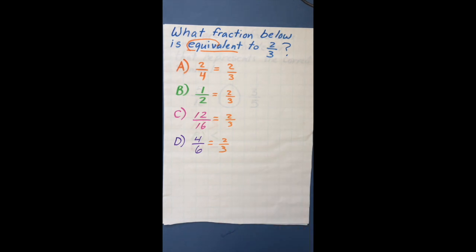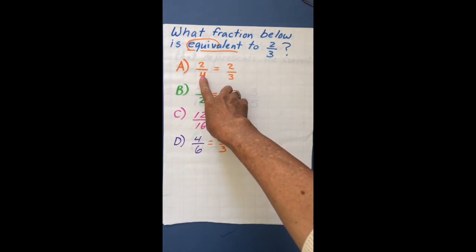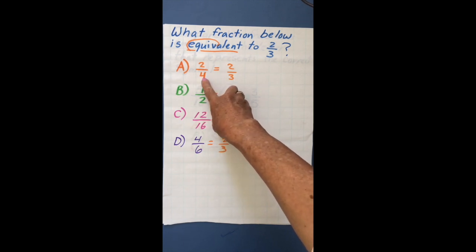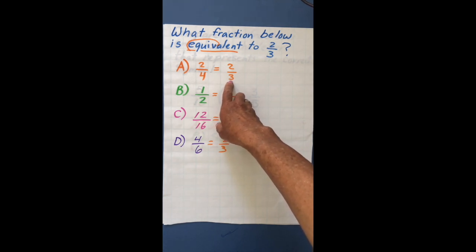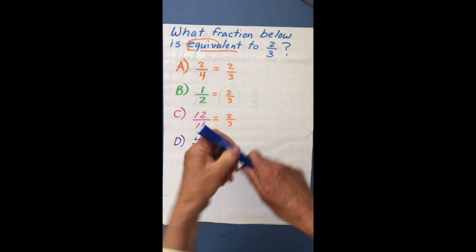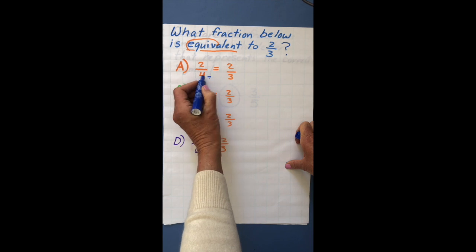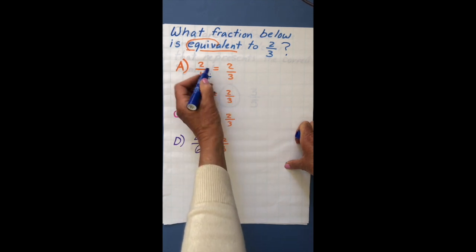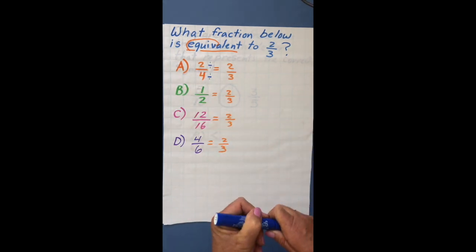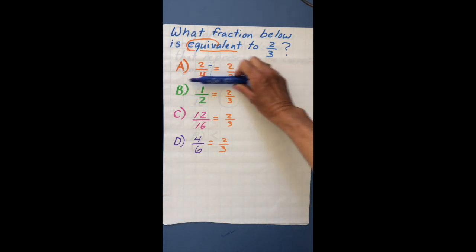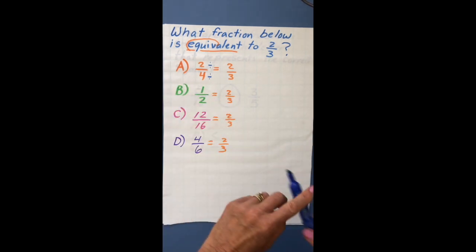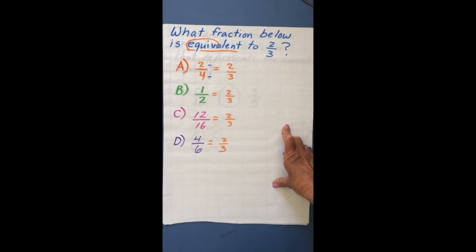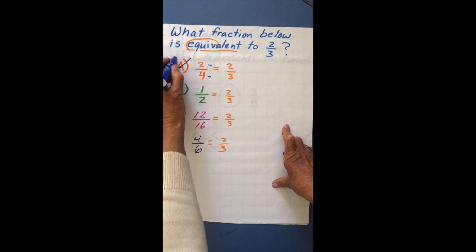Let's try this first answer. We see a 4 and a 3, so we want fewer pieces — we'd have to divide. I'll use skip counting to find if 3 goes into 4: 3, 6. We skipped 4, so we can't make these have the same denominator. That one can't be correct. Next, is 1 half equal to 2 thirds? The 2 is smaller than 3, so we'd multiply. Counting: 2, 4 — we skipped 3, so these can't be equivalent.